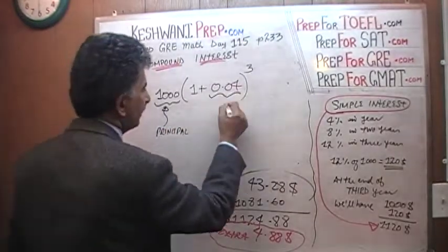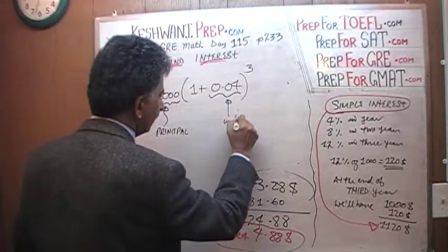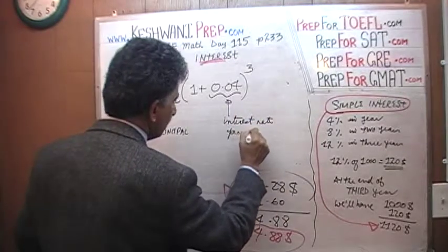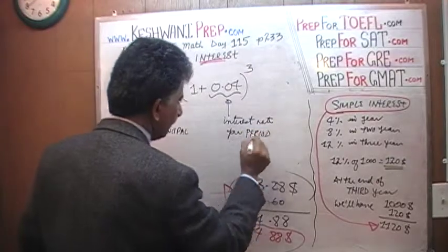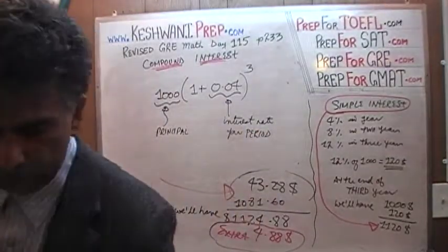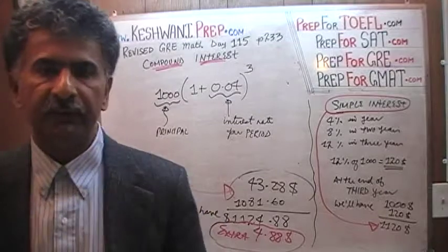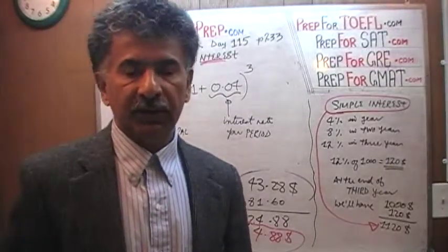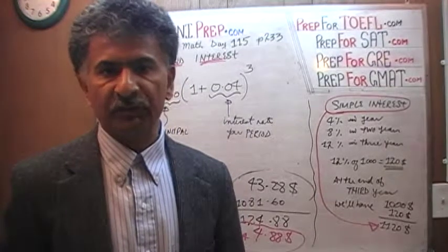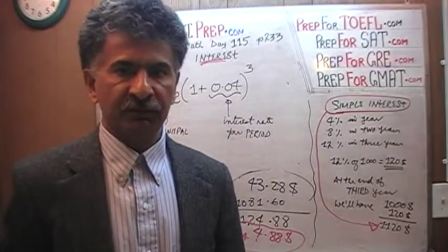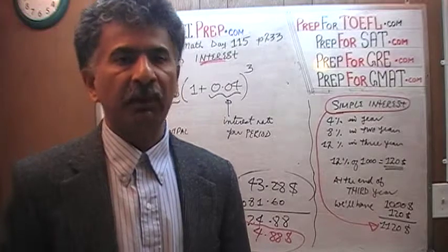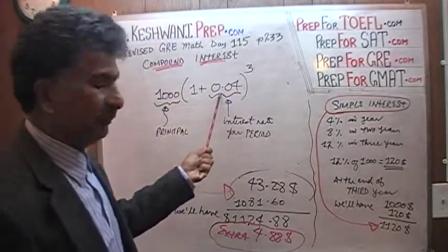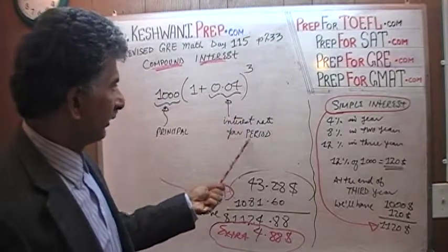This $1,000 is the principal that we are investing. This 4% that you see there is the amount of interest, interest rate per period. Notice how I said it, per period. It does not have to be per year. If the compounding, if the interest rate that is extended to you, they can tell you that we are going to pay you 3% interest per month, we are going to pay you 3% interest per week, or we are going to pay you 3% per hour. Whatever that period happens to be, that's what that is. This is the amount of interest, interest rate per period.